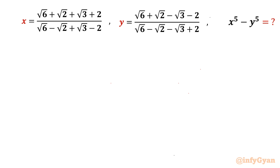Welcome back to Infigyan friends. Today in this video we are having one very interesting and challenging Math Olympiad problem on algebraic expressions. We have to simplify or evaluate x⁵ minus y⁵ once x and y are known.